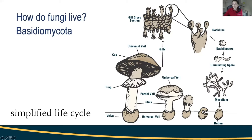That mycelium will grow and differentiate, starting first as a little ball — like a little potato — that will differentiate into a stalk and a cap. Depending on what kind of mushroom we're talking about, there may be different structures, either gills on that cap, or pores, or teeth. From there, this mushroom will develop, mature, and those spores will become mature and the cycle will continue.